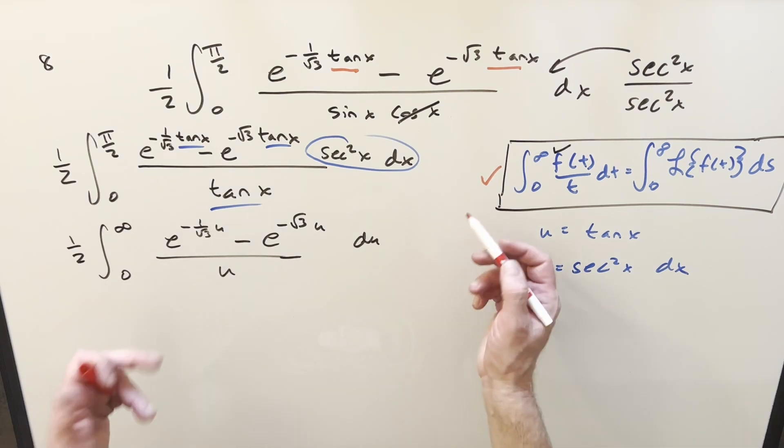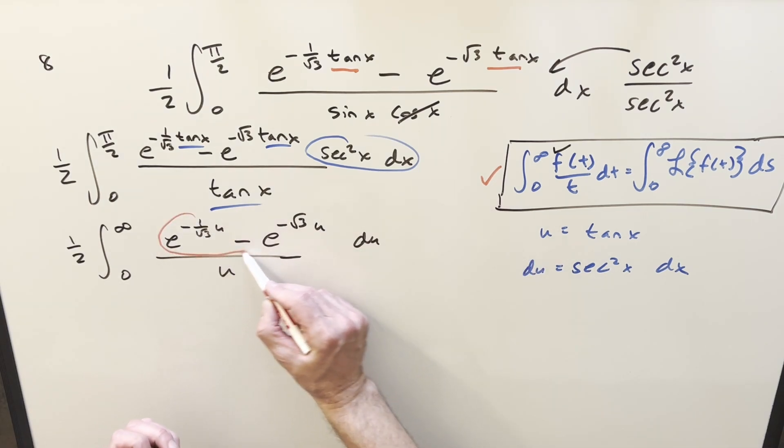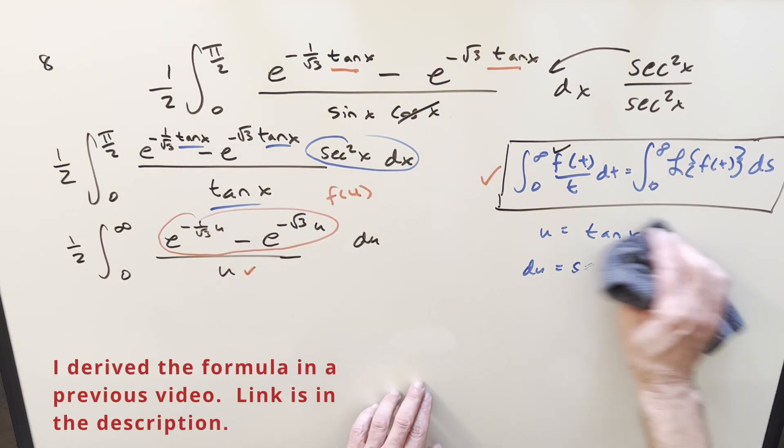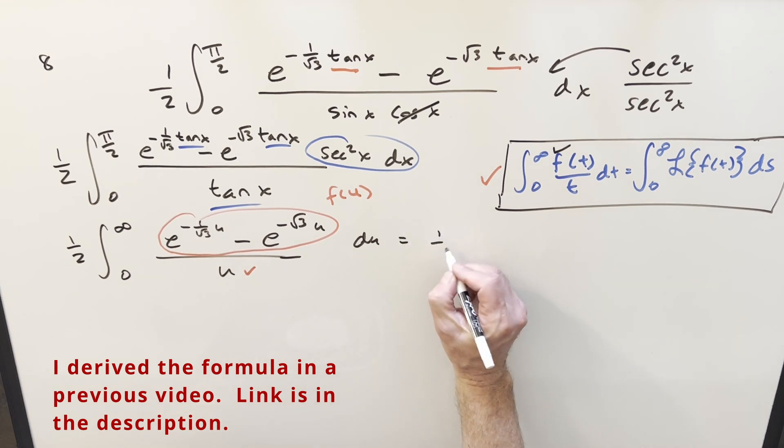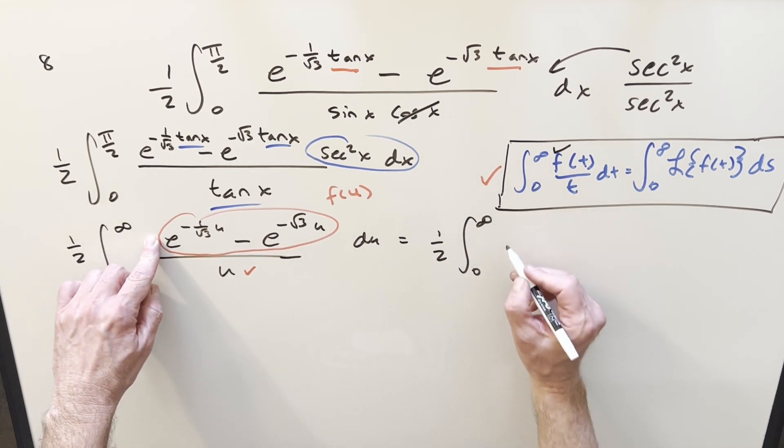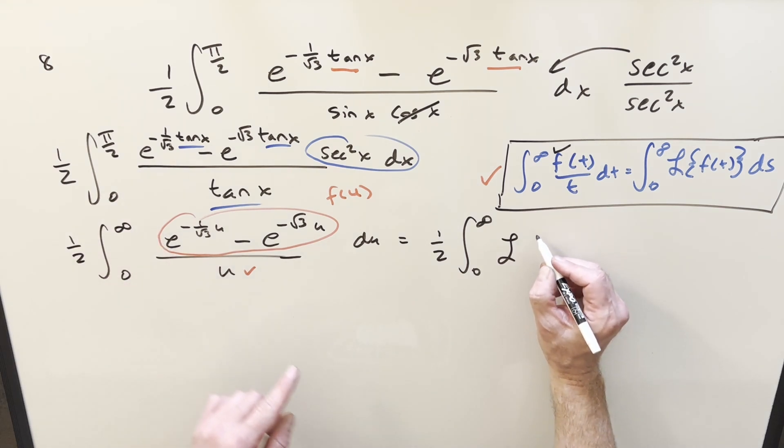We've got our bounds in the right place. We've got our f of u will be this stuff. And then the t, we just have u. This is our f of u. And so we can just kind of go ahead and apply this formula. So what's going to happen, we still have 1 half in front, same bound, 0 to infinity. And then we just need the Laplace transform of all this stuff right here.